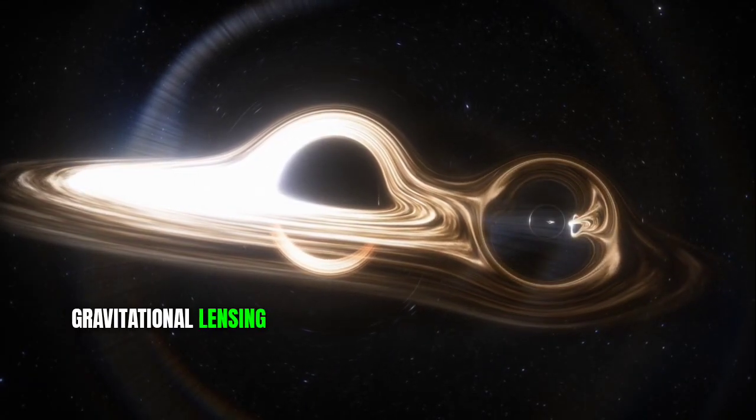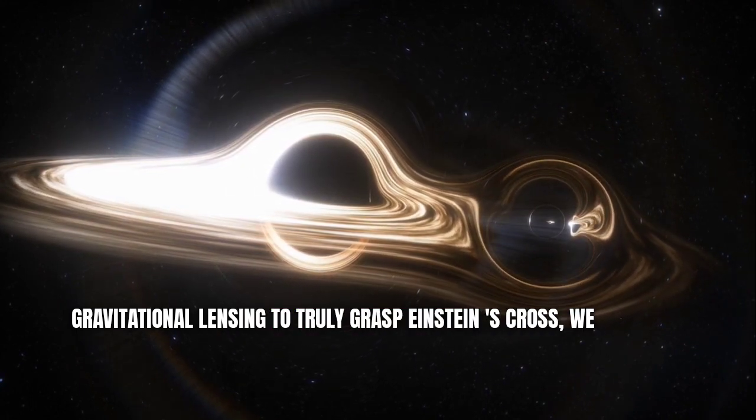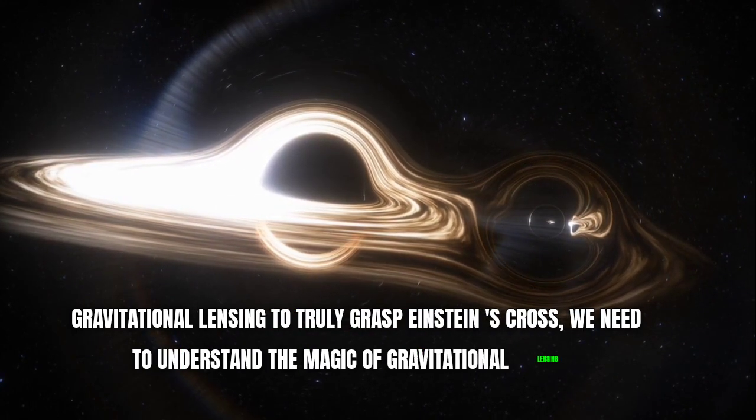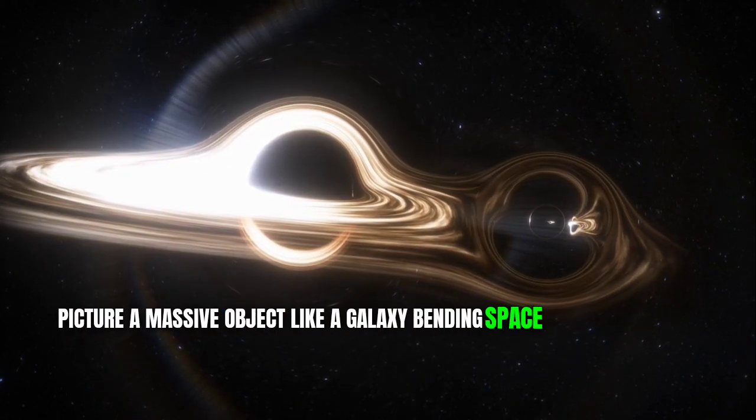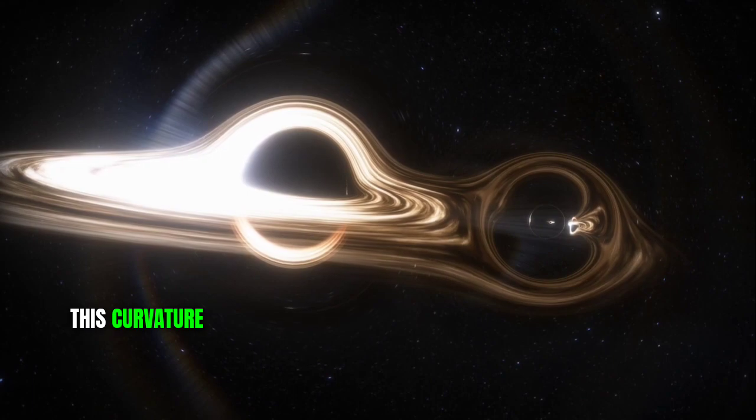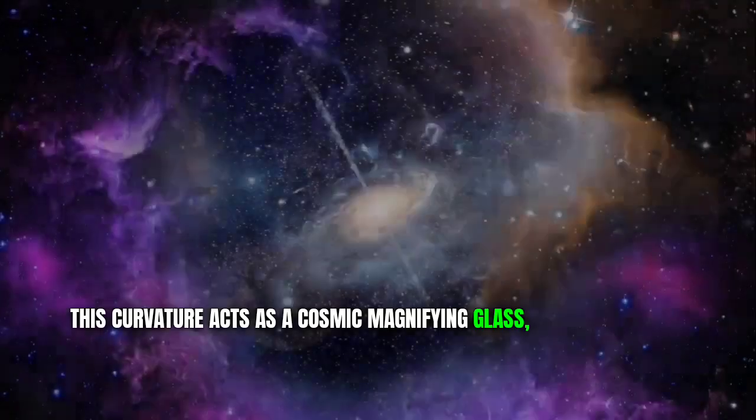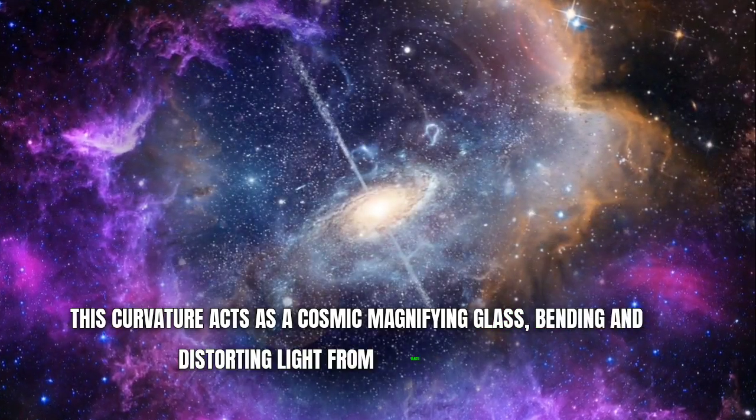Gravitational lensing. To truly grasp Einstein's cross, we need to understand the magic of gravitational lensing. Picture a massive object, like a galaxy, bending spacetime around it. This curvature acts as a cosmic magnifying glass, bending and distorting light from objects behind it.